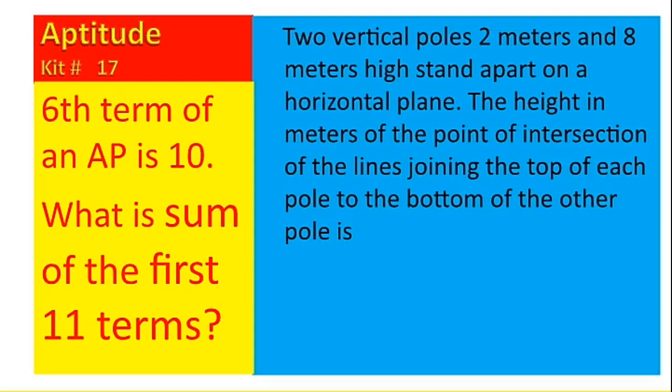The first question is two vertical poles, two meters and eight meters high. And another question is from arithmetic progression. Sixth term of an AP is 10. So let us do the first question.